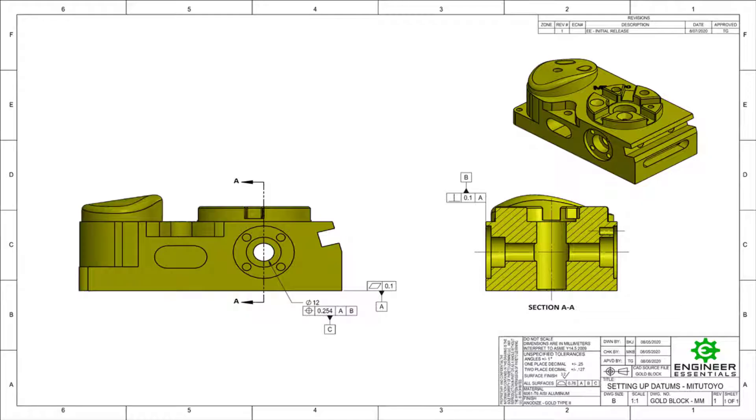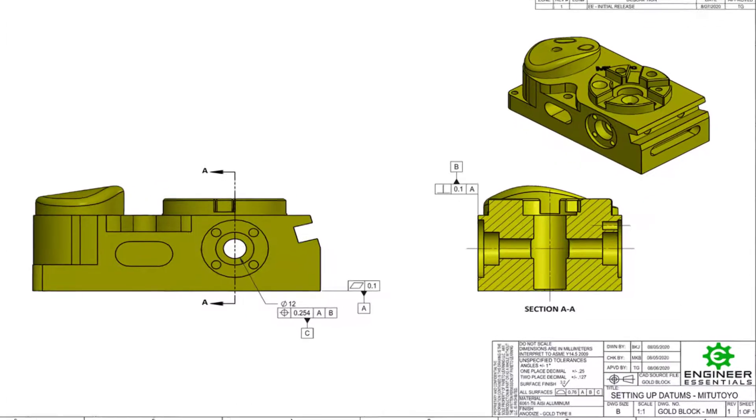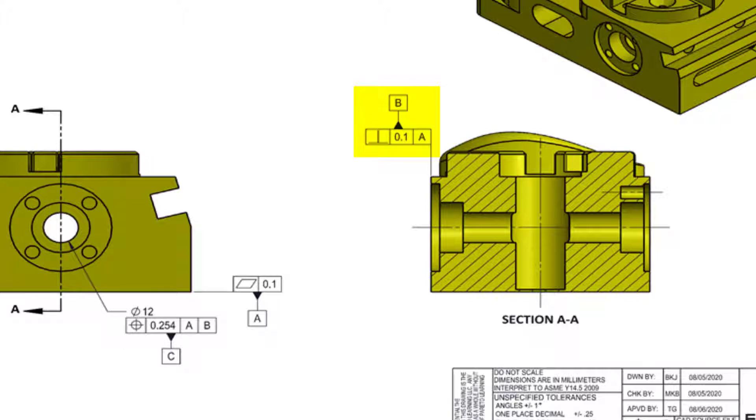Let's take a look at datum feature B on the drawing. We see the datum symbol attached directly above a feature control frame that contains perpendicularity. This is the qualifier for this datum feature. If you were to look this up in the standard, it would not be listed as datum qualification or qualifying. They refer to it as datum feature control. In the industry though, we call this datum qualification.